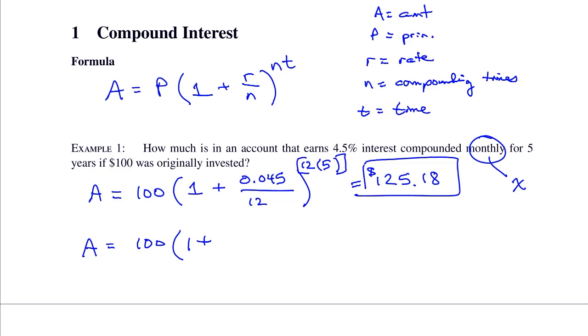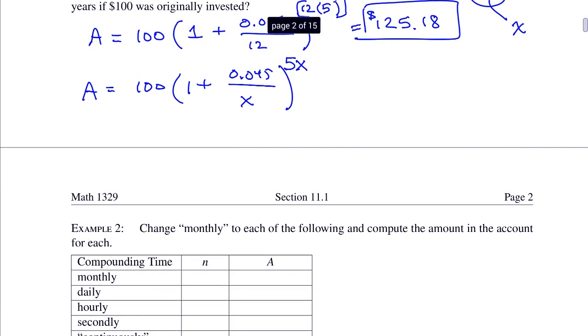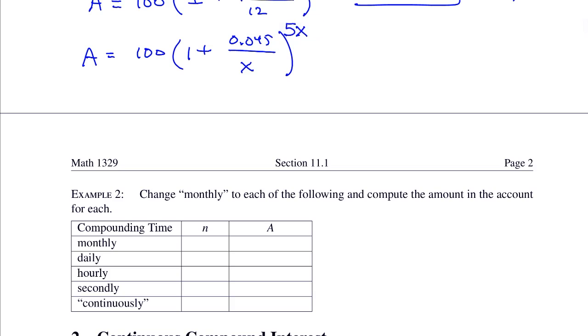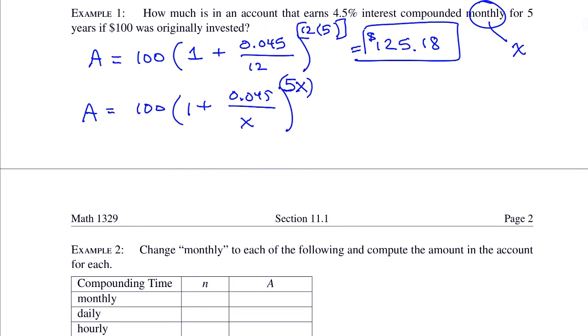So 100 times 1 plus 0.045 over x raised to the 5x power. So we've changed the monthly into, or the compounding times, into x. And now, let's look at page 2. And we're going to create this chart here, and we're going to put in the formula into Y equals. So go ahead and take Y equals and put in 100 times 1 plus 0.045 divided by x, close, and then raise to the 5x power. Be sure to put the 5x in the set of parentheses, in the exponent.